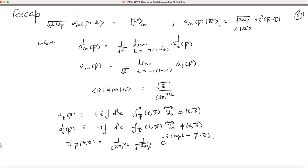Now I know how to create a single-particle state by acting with a_in† on |Ω⟩. I want to know how to create a two-particle in-state, or a three-particle in-state, or a state with any number of particles. You might already be able to guess that, since we have arranged everything to mimic free field theory, our naive guess is that having multiple a† operators acting on the vacuum will give you a state with several particles — because that is what happens in free theory.